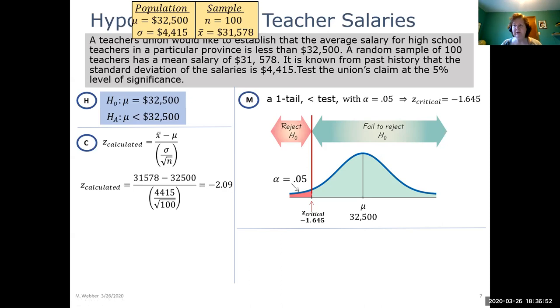Remember, we rounded to two decimal places because that's what our tables read to. We now need to look up a p-value for this Z calculated. We have to remember though that we have a less than test. By definition, for a left tail test, we can recall that the p-value is the area to the left of Z calculated. We look up our Z calculated of negative 2.09 and we can read that the area to the left of that is 0.0183. Please note, this is an area, the 0.0183. This is a Z score.